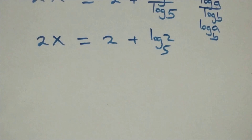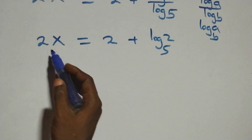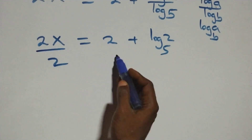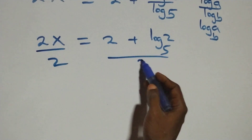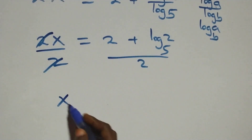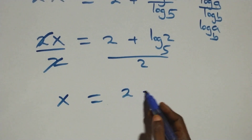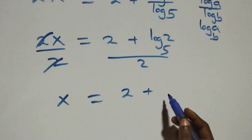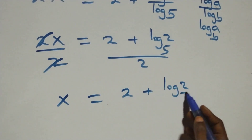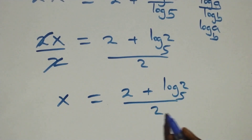Then next step: we divide both sides by 2 — divide this side by 2, also divide that side by 2. Here 2 cancels each other, and we have x equals 2 plus log 2 base 5, all over 2.